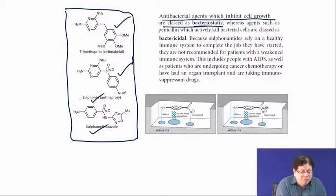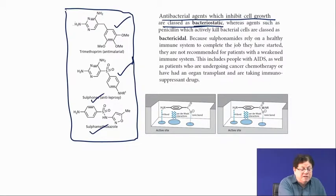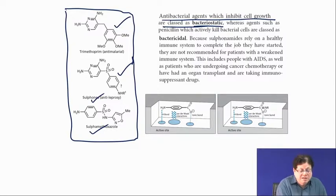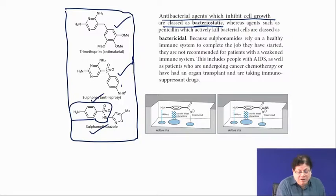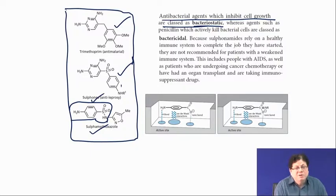Trimethoprim inhibits the DHFR — dihydrofolate reductase — of microorganisms. These sulfonamides can be written as para-amino SO2NR. They mimic para-aminobenzoic acid, which is a component of folic acid.